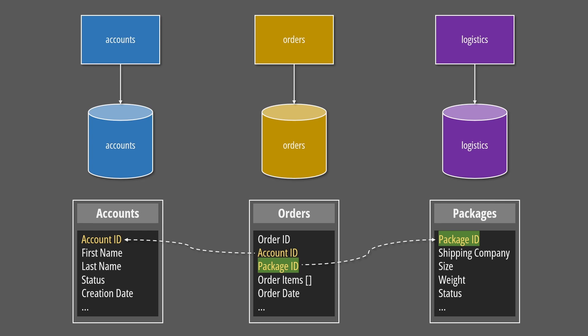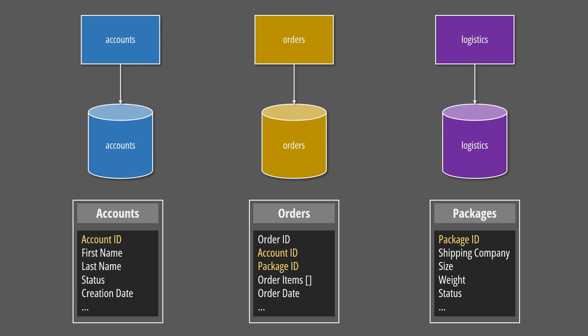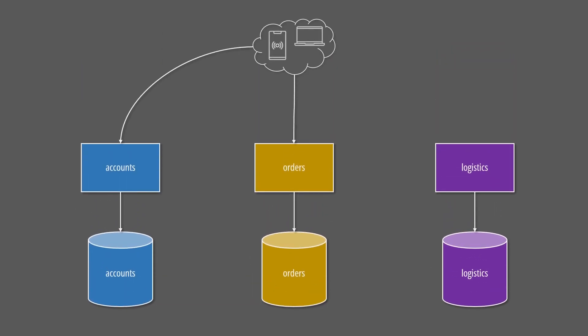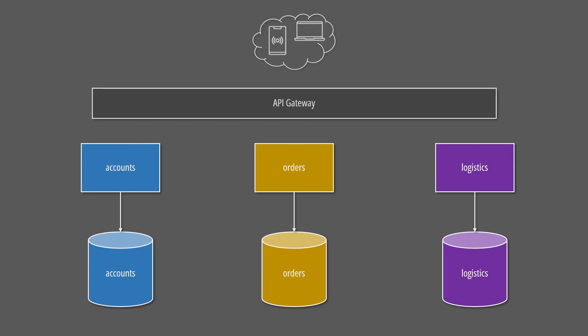If we included the package status directly within the order, we would be forced to synchronize data between the logistics service and the order service on every status update. However, an end user wants to visualize all the data when viewing an order. If all we are doing is aggregating data and not business logic, we can expose separate APIs for each subdomain and shift the aggregation responsibility to the clients. We can optimize this by introducing an API gateway that aggregates the data, dealing with that complexity only once.